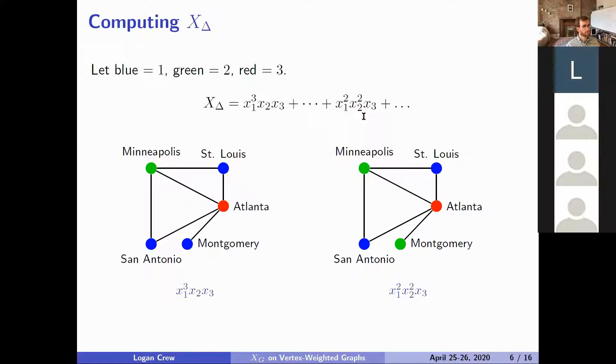So like I was mentioning, these are both proper three colorings. They're essentially treated the same by the chromatic polynomial, but they're treated differently by the chromatic symmetric function. And then this illustrates some kind of what's going on with that.